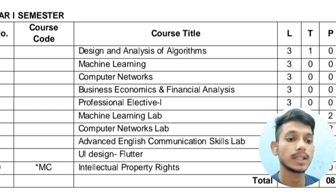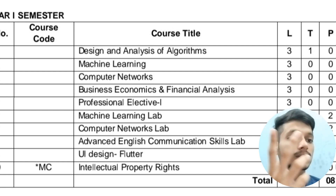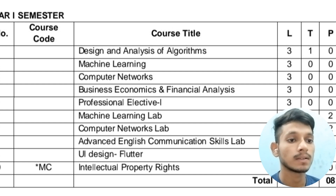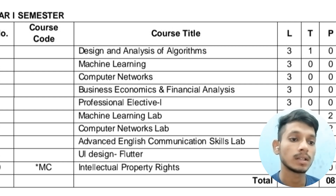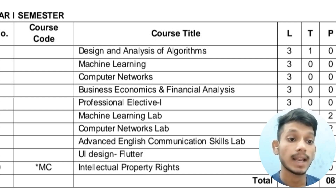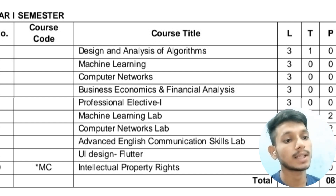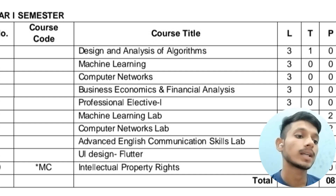Now let's see the third year syllabus. In the first semester of third year, you will have 10 subjects including labs and a non-credited subject. The subjects are: Design and Analysis of Algorithms, Machine Learning, Computer Networks, Business Economics and Financial Analysis, Professional Elective 1, a Machine Learning Lab, a Computer Networks Lab, a lab for Advanced English Communication Skills, and a subject related to UI Design and Flutter. The non-credited subject is Intellectual Property Rights, and there are 20 credits total.